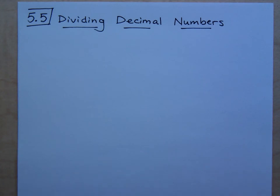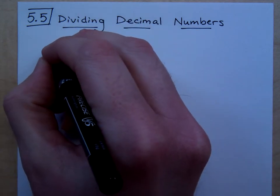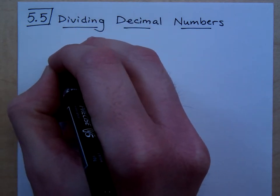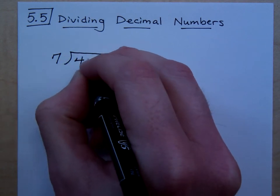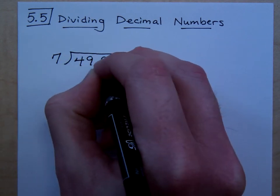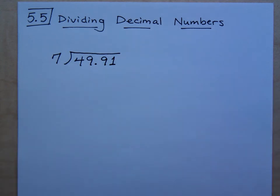Let's start off with some nice things. It's really nice if you're dividing by whole numbers, if you're dividing by integers. Everything is nice. For example, if I have this, if I say I'm dividing 7 into 49.91.